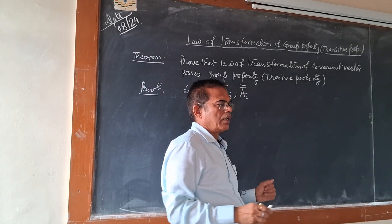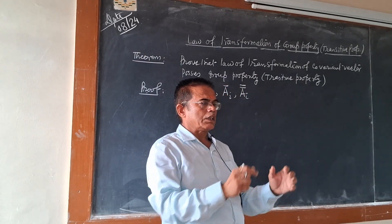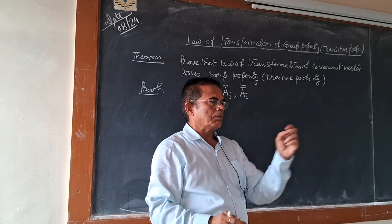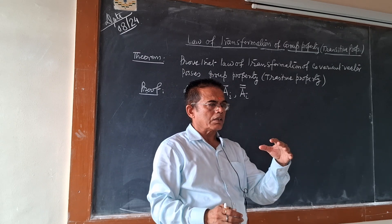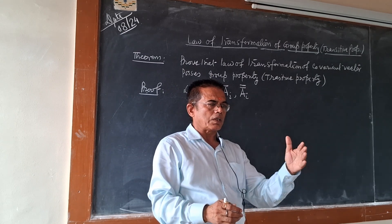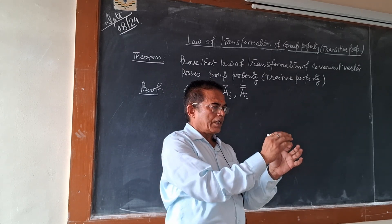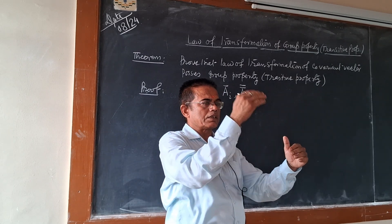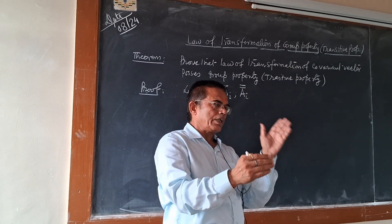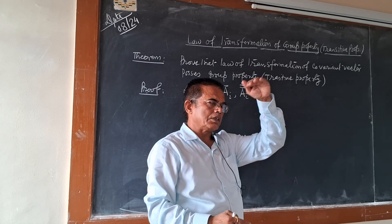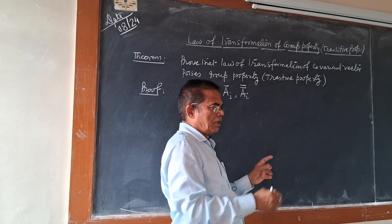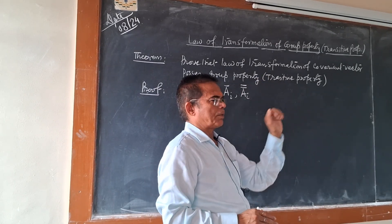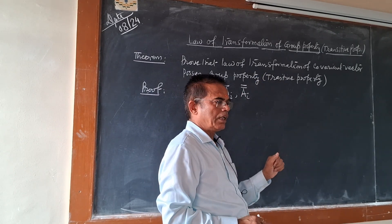Transitive law — यानी किसी भी set में कोई भी तीन element लेते हैं. कोई relation transitive होता है, यदि A का relation B से हो, B का relation C से हो, तो A का relation C से हो. इसके लिए तीन frame of reference लेना पड़ेगा.